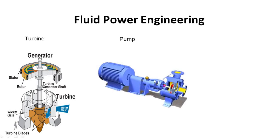In a pump, mechanical energy is the input — electrical energy drives a motor, the motor converts it to mechanical energy, and this mechanical energy is converted to hydraulic energy at the outlet. In a turbine it is the opposite: we supply hydraulic energy and get mechanical energy as output. So a turbine is a power-producing device and a pump is a power-absorbing device.